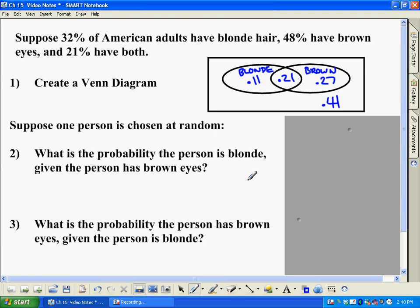So rather than just saying, what's the chance the person is blonde, well, that's easy. Blonde would be 32%. However, if we put a condition on it like this, the person, we know the person has brown eyes, that narrows it down. It's not all people. It's only the 48% of people that have brown eyes.